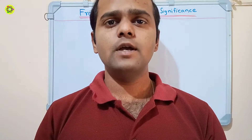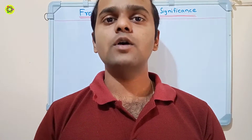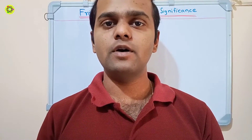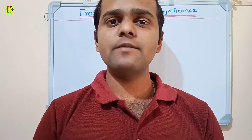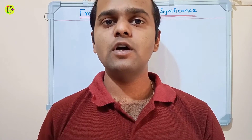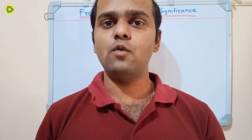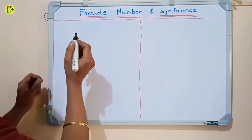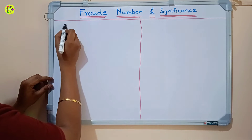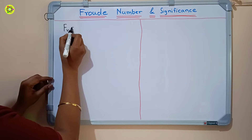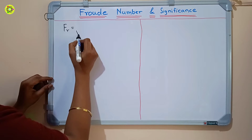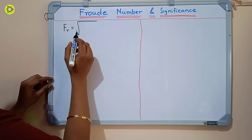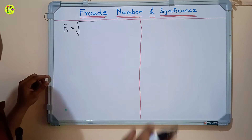Hi students, welcome. In this video we will study about Froude number and its significance. Froude number is a dimensionless number and it describes the different flow regimes of open channel flow. Froude number is denoted by Fr.